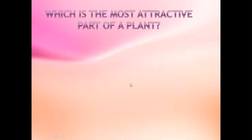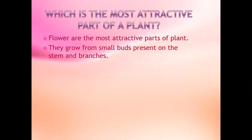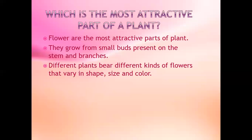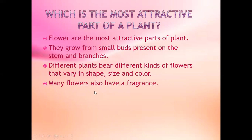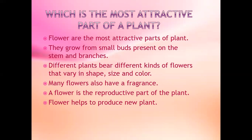Which is the most attractive part of a plant? Flowers are the most attractive parts of a plant. They grow from small buds present on the stem and branches. Different plants bear different kinds of flowers that vary in shape, size, and color. Many flowers also have a fragrance. A flower is the reproductive part of the plant, and it helps to produce new plants.